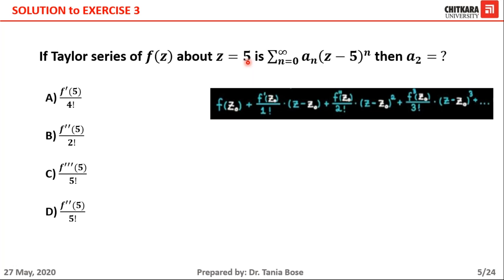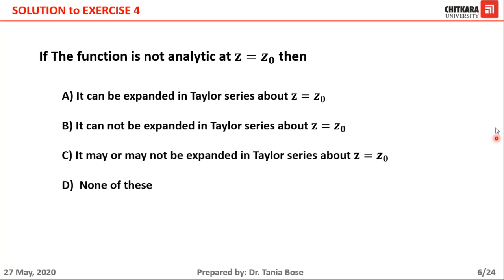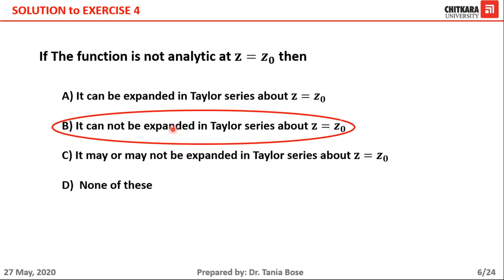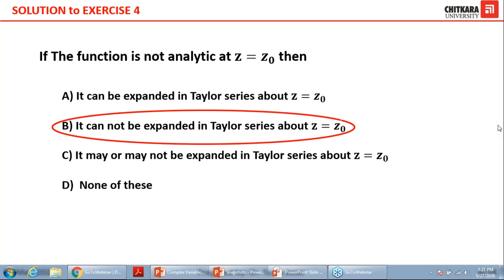The fourth question: if the function f(z) is not analytic at z = z₀, which option is correct? Recalling Taylor's theorem — the function must be analytic to be expanded as a Taylor series. That means if the function is not analytic, it cannot be expanded in a Taylor series about z = z₀.